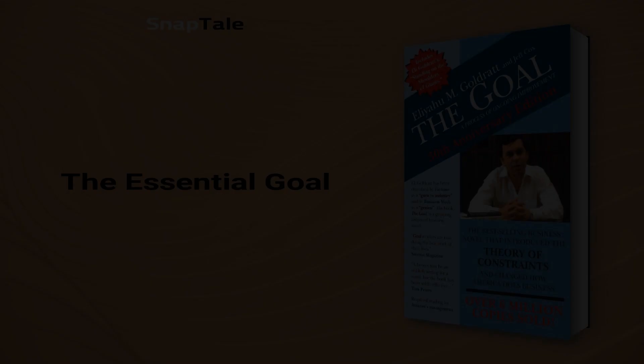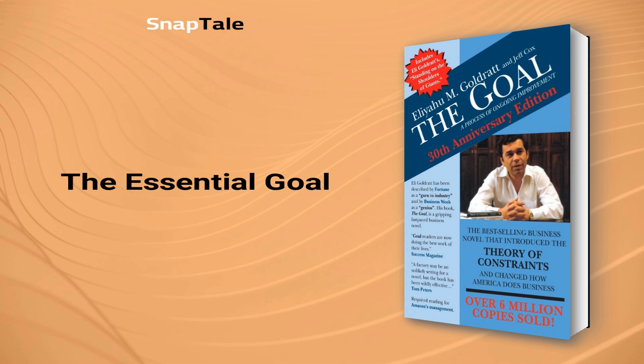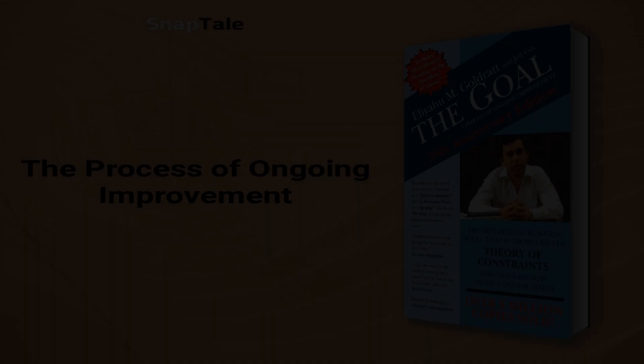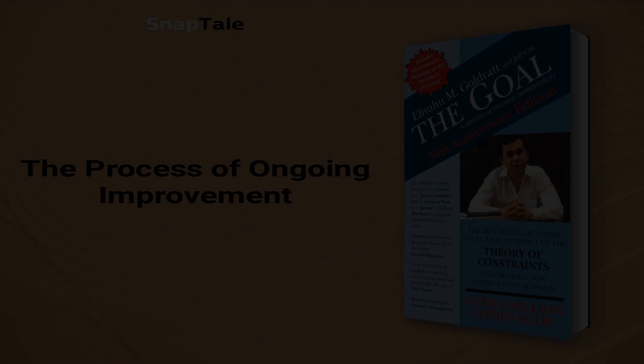The Essential Goal: the protagonist, Rogo, embarks on a journey to determine his plant's essential goal. While analyzing the plant's processes, he discovers that cost-effective purchasing is important but not the ultimate goal. He realizes that providing job opportunities is not the plant's essential goal either. Rogo concludes that the plant's main objective is to make money, and any action that moves it closer to this objective is productive. He finally understands his plant's essential goal and that of the larger company.